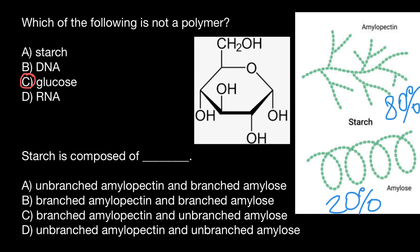By the way, amylopectin also resembles glycogen, which humans use in order to store energy. It is a form of amylopectin, but more branched. We store energy in fats — this is long-term storage — but if we need energy immediately, it is used in the form of glycogen. So the correct answer is C: branched amylopectin and unbranched amylose.